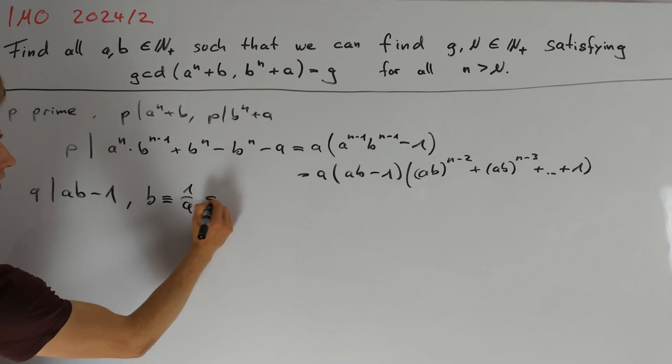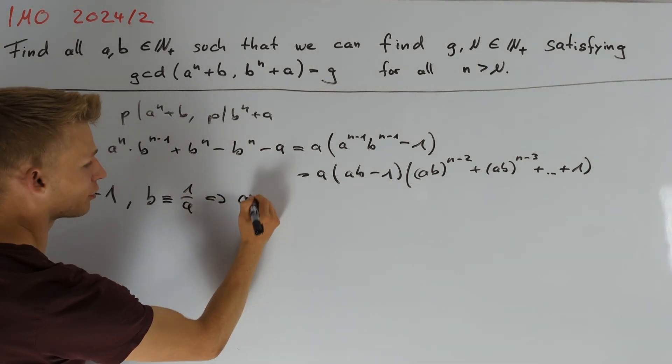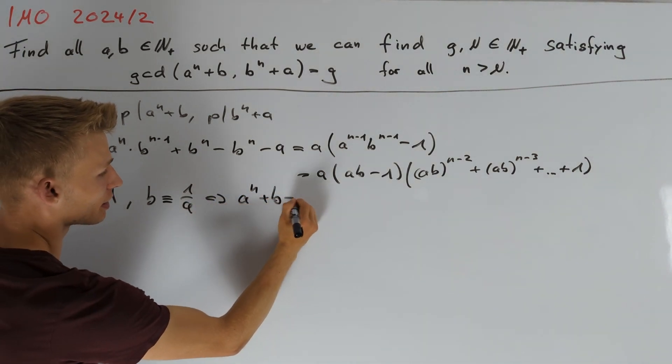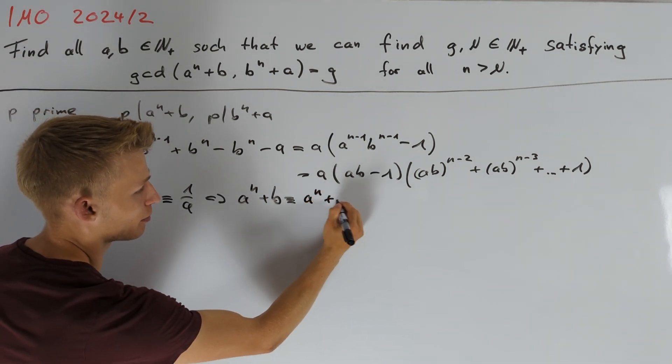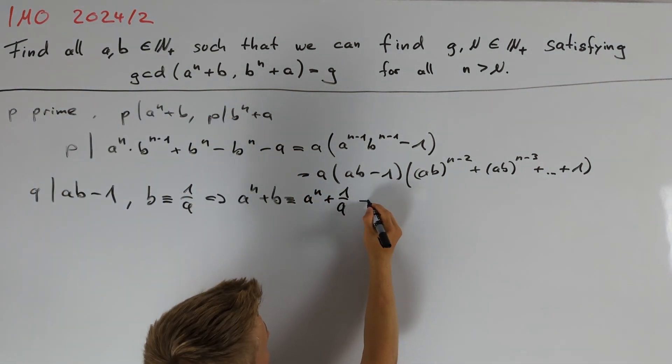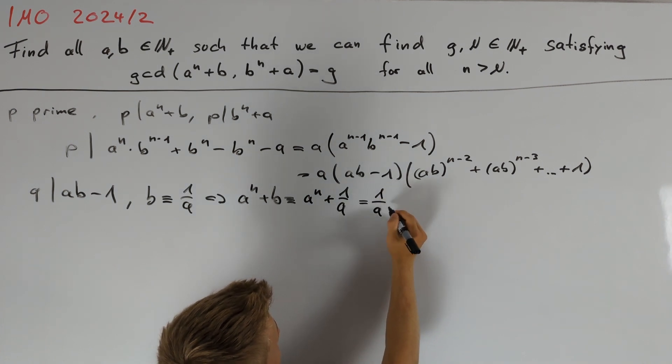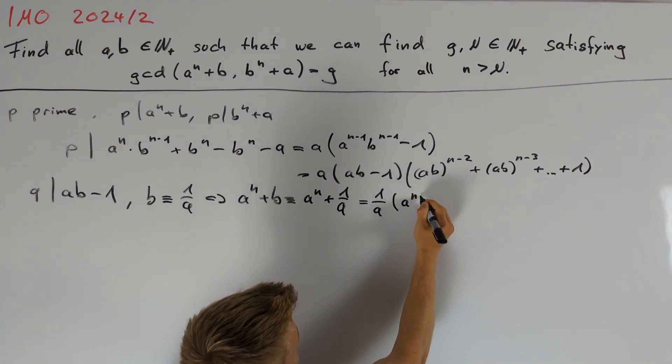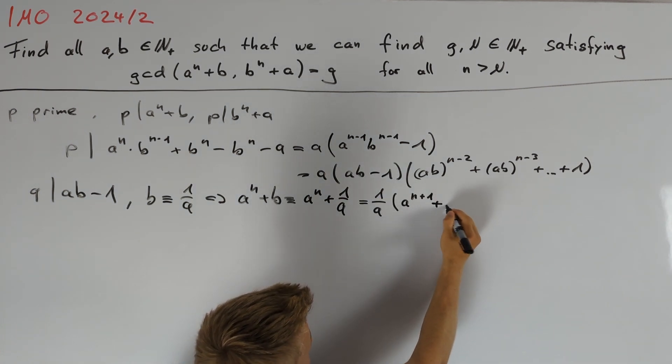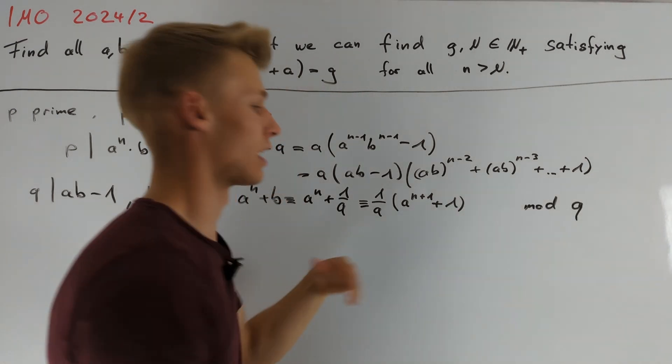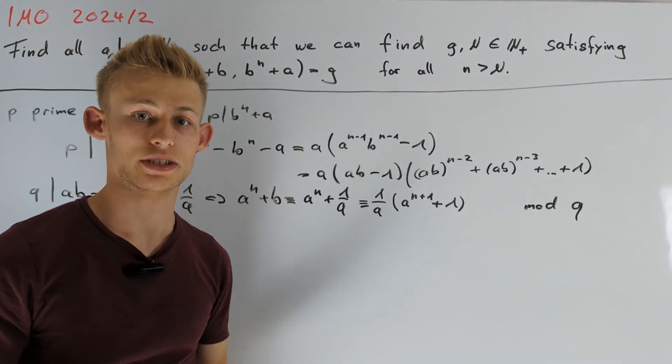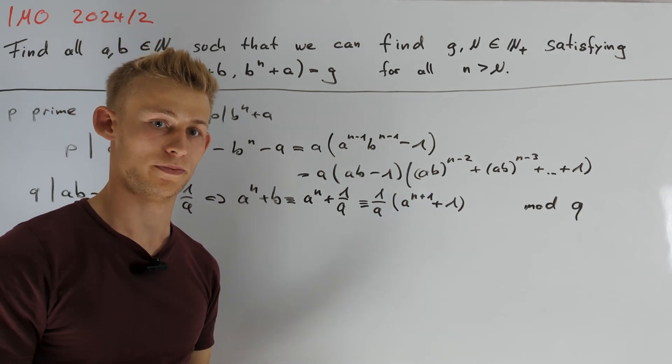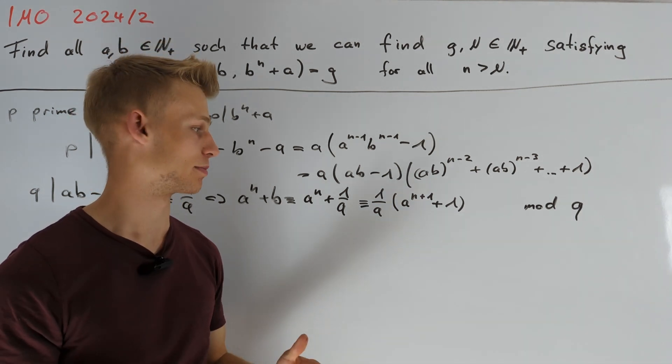We have that b is congruent to 1 divided by a and therefore we get that a to the power of n plus b is congruent to a to the power of n plus 1 divided by a. Or we can write this as 1 divided by a times a to the power of n plus 1 plus 1. So we would like to choose n in such a way that a to the power of n plus 1 is congruent to minus 1 modulo q. Unfortunately, this is not always possible.